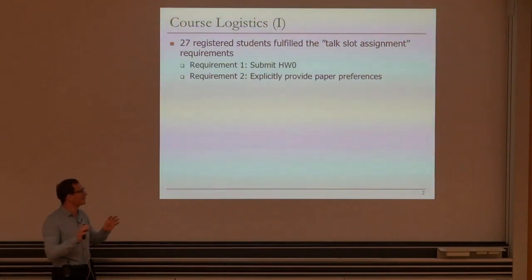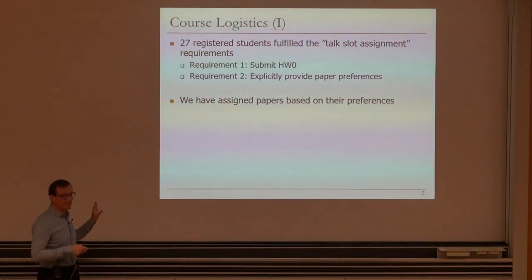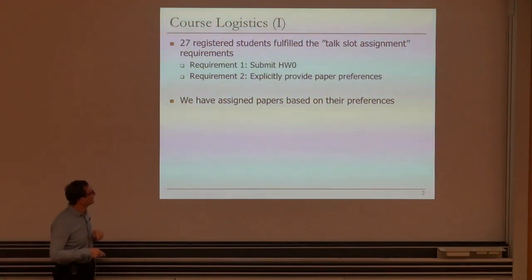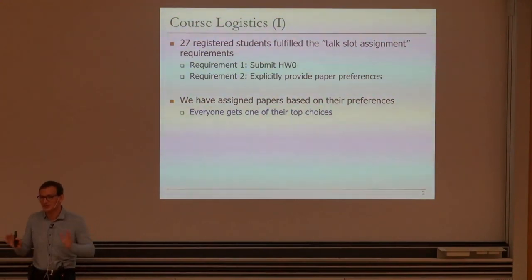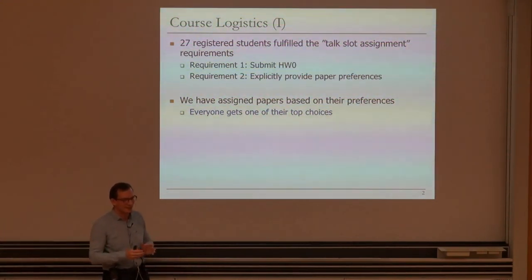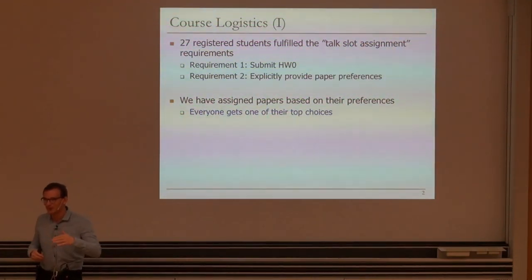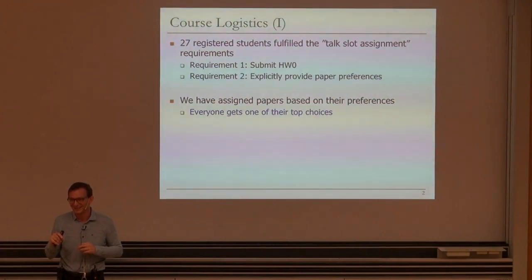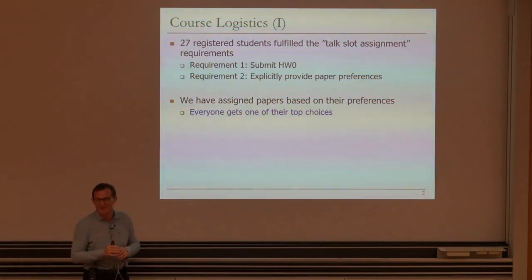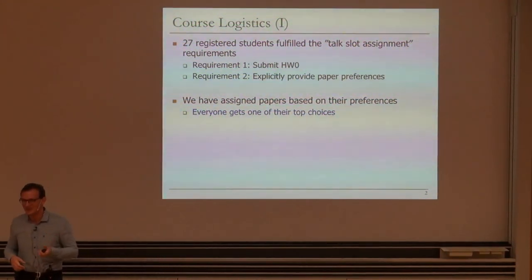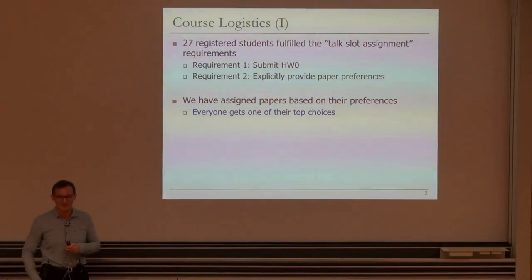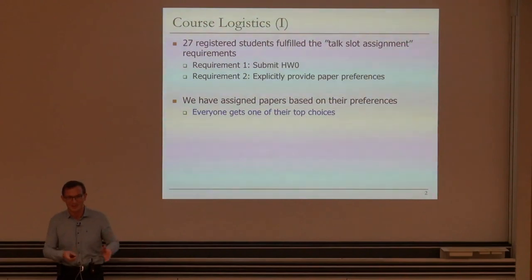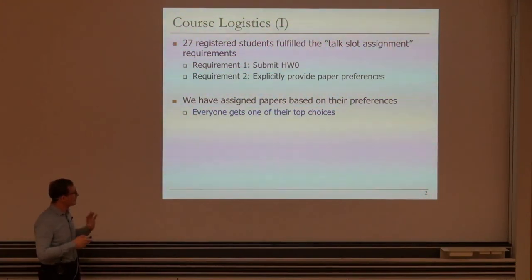Hopefully you're one of those 27, and we'll take attendance. We have assigned papers based on your preferences, and everybody gets their top choice. If you had multiple top choices, that gave us flexibility. The top choice was either five or four — some people didn't want to give a five to any paper, though one student mentioned that clicking five switched back to four, which may be a bug in Moodle. Basically, we've done this assignment and everyone got their top choices.